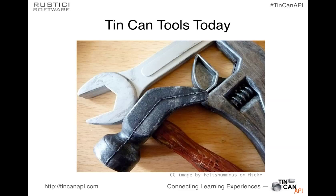One of my favorite quotes, made by Tom Friedman: 'Big breakthroughs happen when what is suddenly possible meets what is desperately necessary.' I think that's a perfect analogy for what we have going on right here. Tin Can is making a lot of things suddenly possible, and many of them are desperately necessary. I know a lot of people are very frustrated with the tools and infrastructure available in their training world, and right now we have suddenly possible new things that are meeting a big swath of demand.